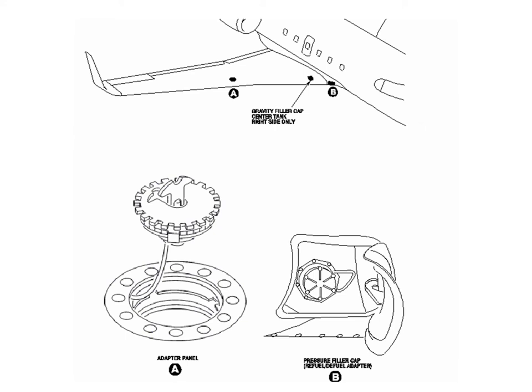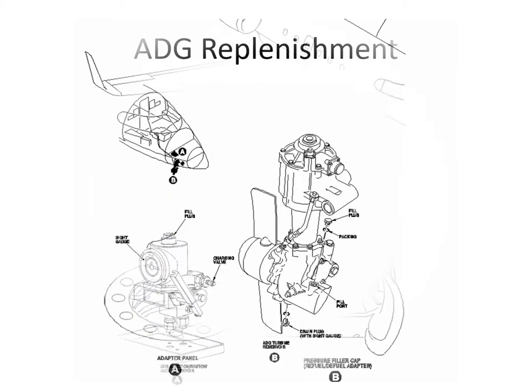For refuelling, we have gravity refuel capability with one gravity fill cap on each wing for the main tanks. On the right-hand wing at the inboard part there's an additional gravity fill cap that will fill the centre tank group. There is also a tail tank group but you can't gravity fill that. The pressure refuelling point is in the wing-to-fuselage fairing panel right at the root at the front, and there's a control panel just above it for doing the pressure refuelling. For ADG replenishment, there's a small hand pump and reservoir for restowing the ADG once it's deployed, with a self-contained reservoir of hydraulic fluid.